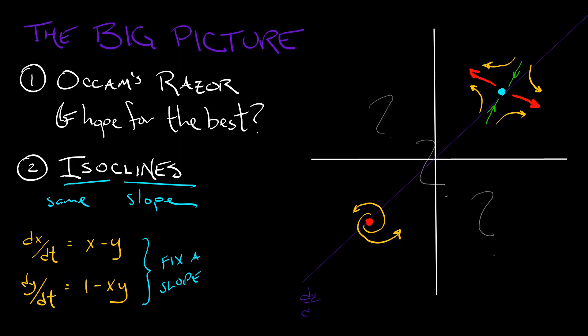This is the locations in the plane where the vectors are pointed vertically, and that happens along the line where x equals y. Or you could say, what about where dy/dt vanishes? Those are places in the plane where the vectors are pointed horizontally. That happens along the hyperbola given by x times y equals one.